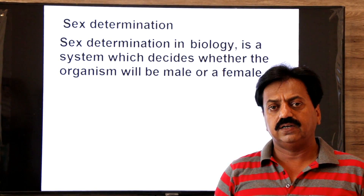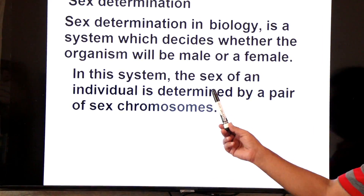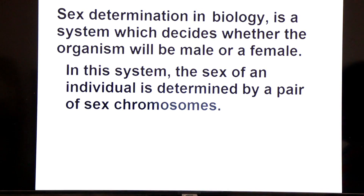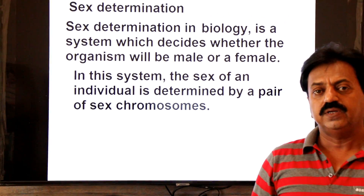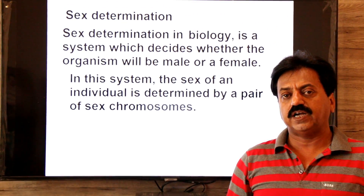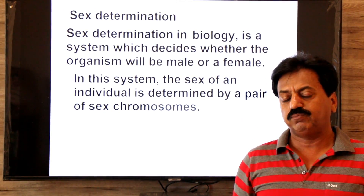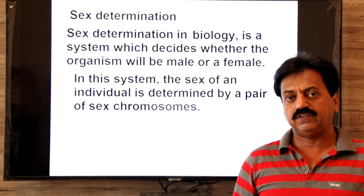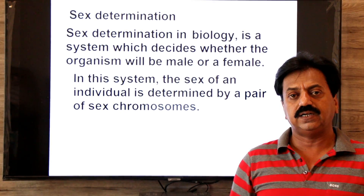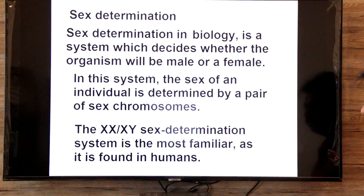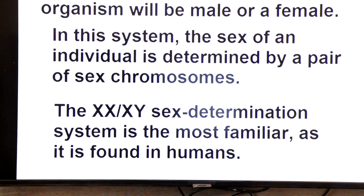The most familiar is XX/XY, which is found in human beings and other mammals as well. In this system, the sex of an individual is determined by a pair of sex chromosomes. The female develops from a zygote that receives two X chromosomes — one from the father and one from the mother. A boy develops from a zygote that receives one X from the mother and one Y from the father.